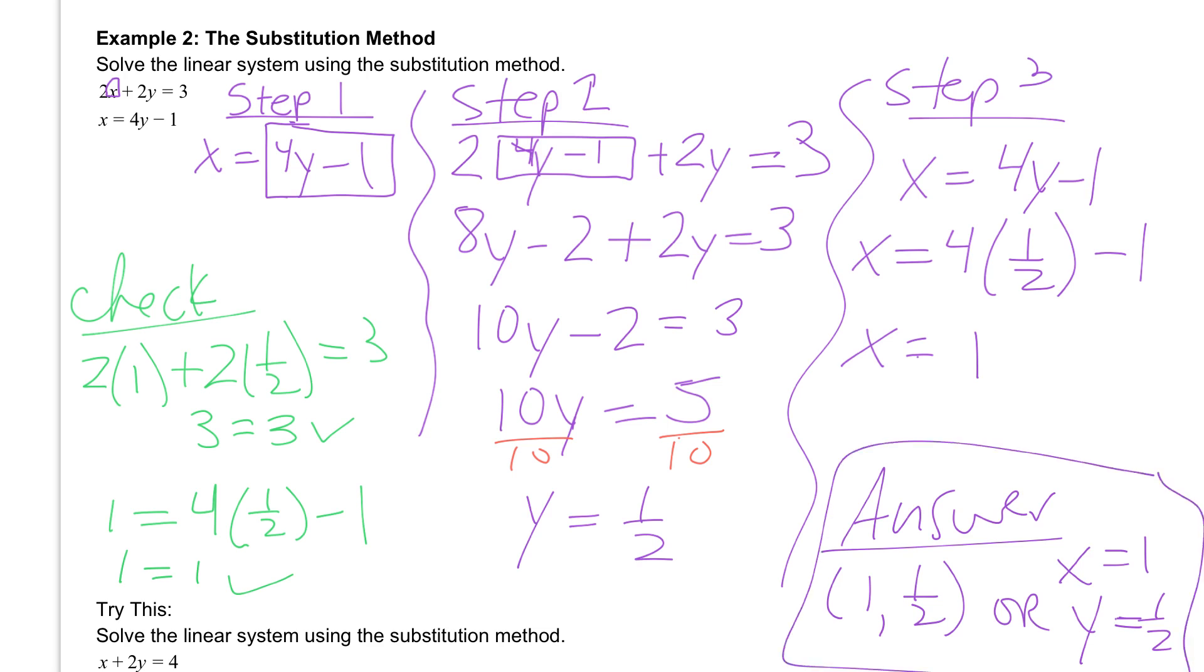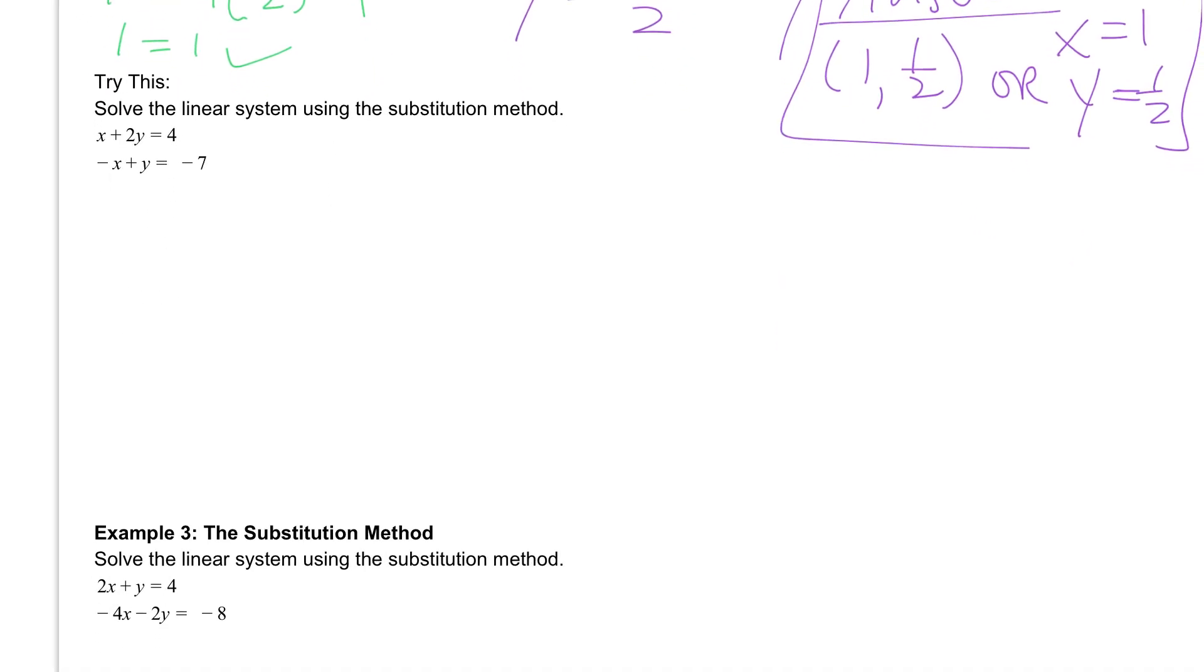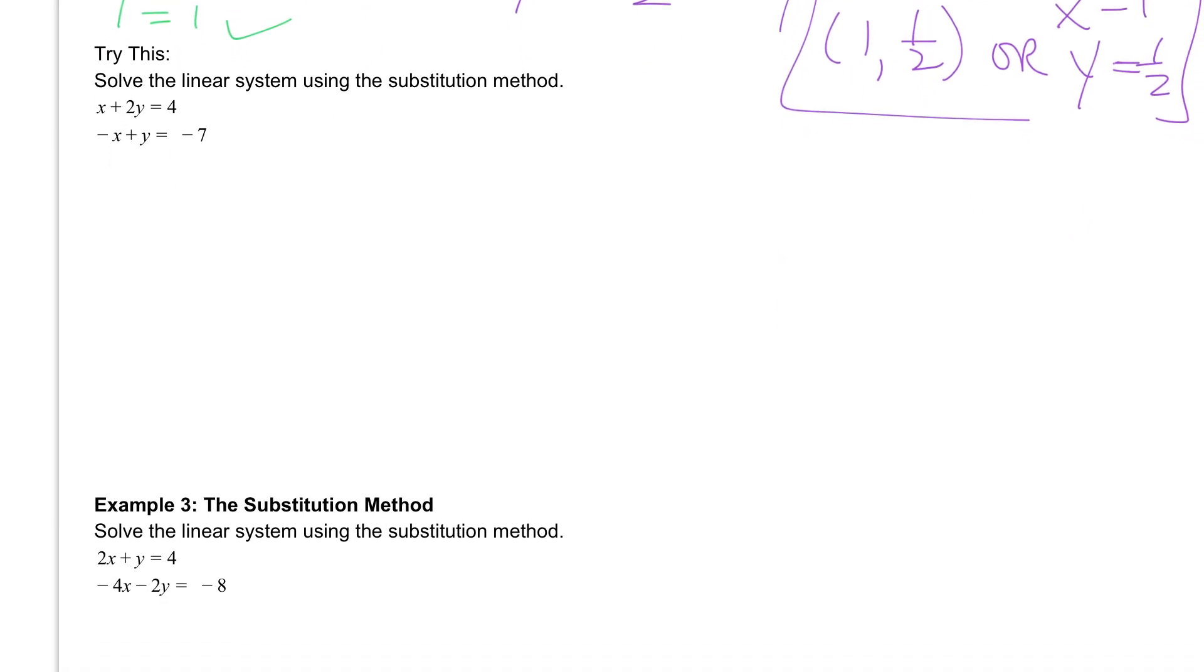If you have questions, let me know. Otherwise, go ahead and pause it and do the try this and unpause it when you're ready to check your answer. If you did the try this correctly, you should get an answer that x is equal to 6 and y is equal to negative 1. Or you could have written it as the ordered pair 6 comma negative 1. If you have questions, let me know.